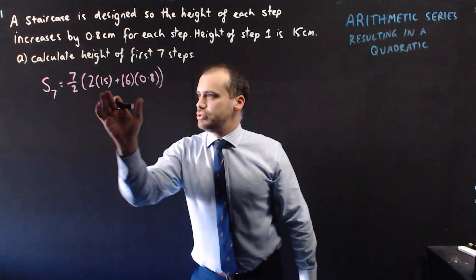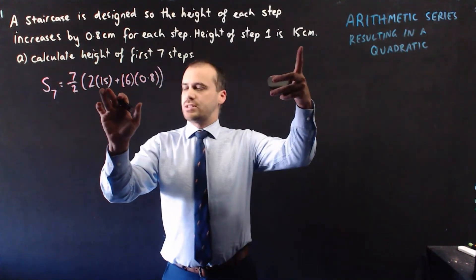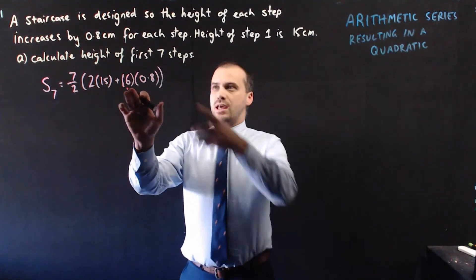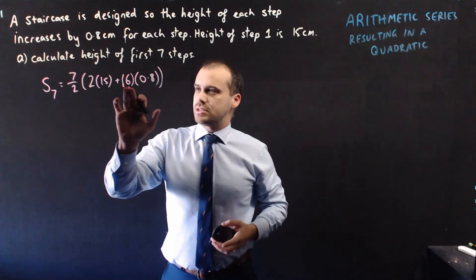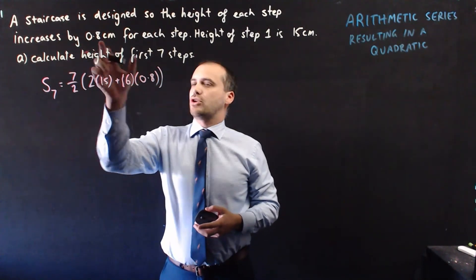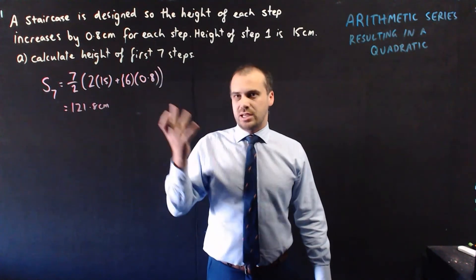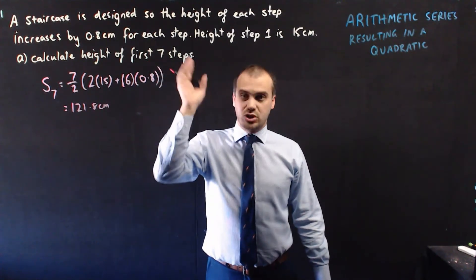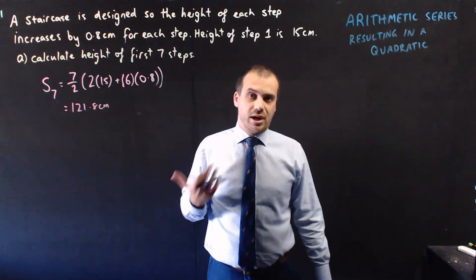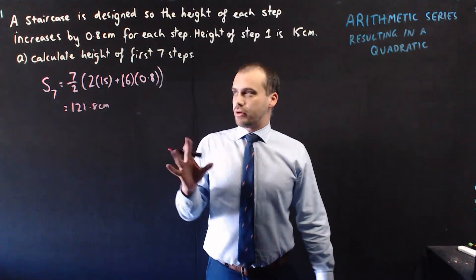15 centimeters, plus n minus one, seven minus one is six, six times 0.8, the common difference between steps. Calculate it. 121.8 centimeters. Now, given it's only seven steps, you can check this by just typing them all into your calculator and seeing what it looks like.